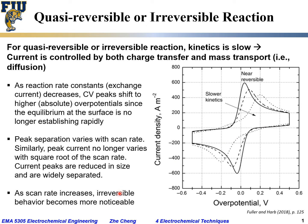You would notice that as the scan rate increases, the irreversible behavior becomes more and more noticeable. For the same reaction and same conditions, if you increase the scan rate, the reaction appears more and more slow — the charge transfer appears more and more sluggish — and the peak separation becomes larger and larger, while the peak height appears relatively lower and lower. That is what the CV curves look like for quasi-reversible, semi-reversible, or irreversible electrode reactions.